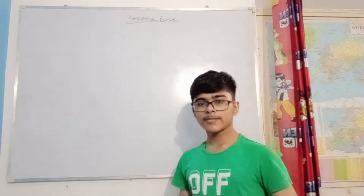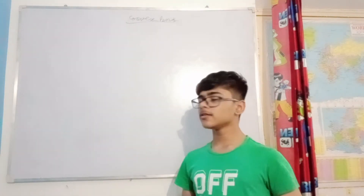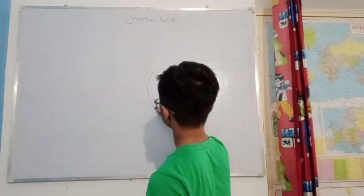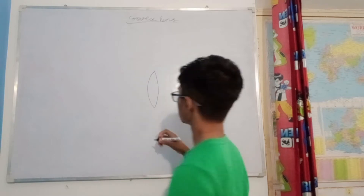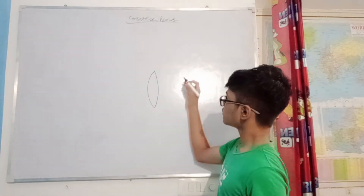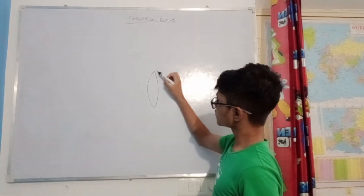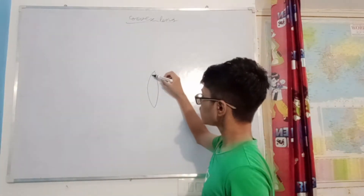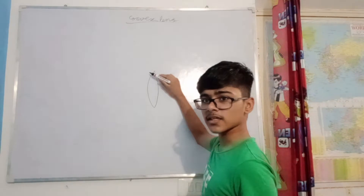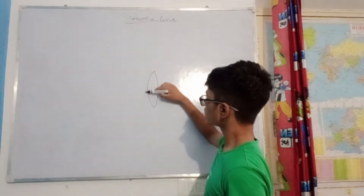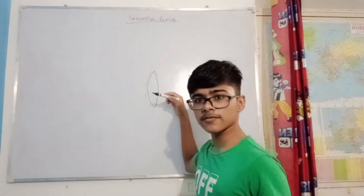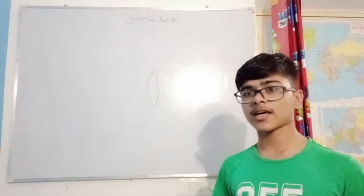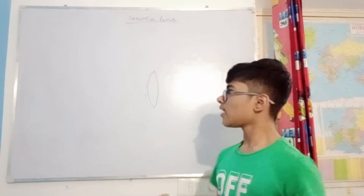Basically, you can see that the convex lens looks like this. At least one surface of the lens is like the outer surface of a sphere — this whole surface looks like the outer surface of a sphere. Moving on, we will learn about its types.